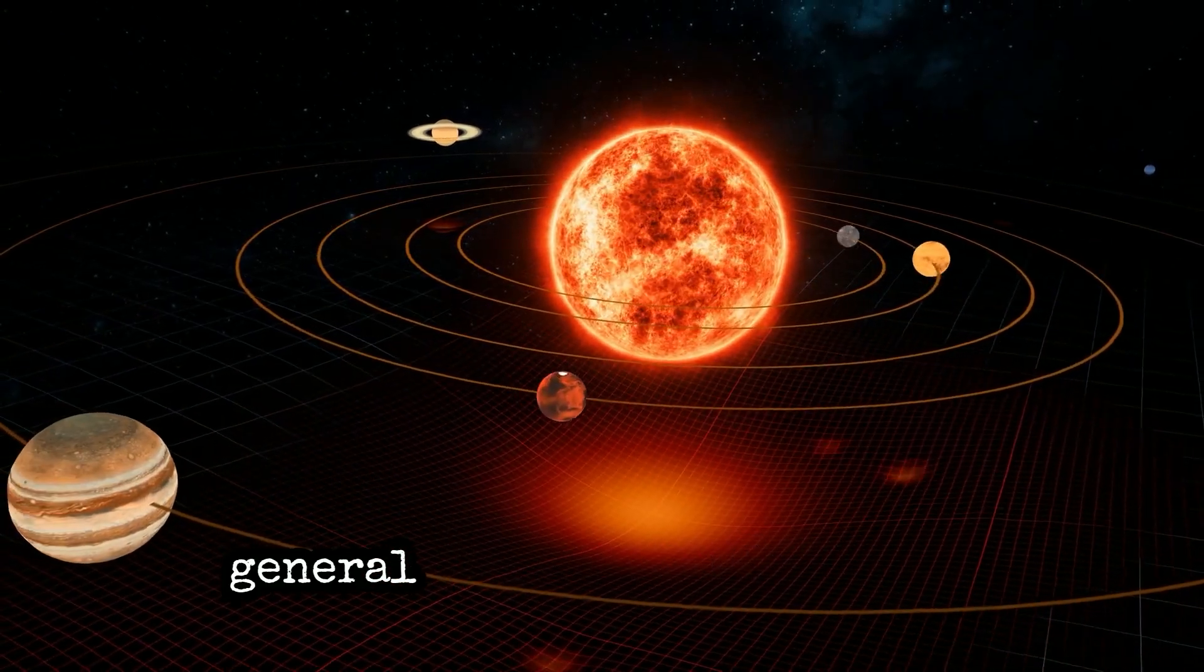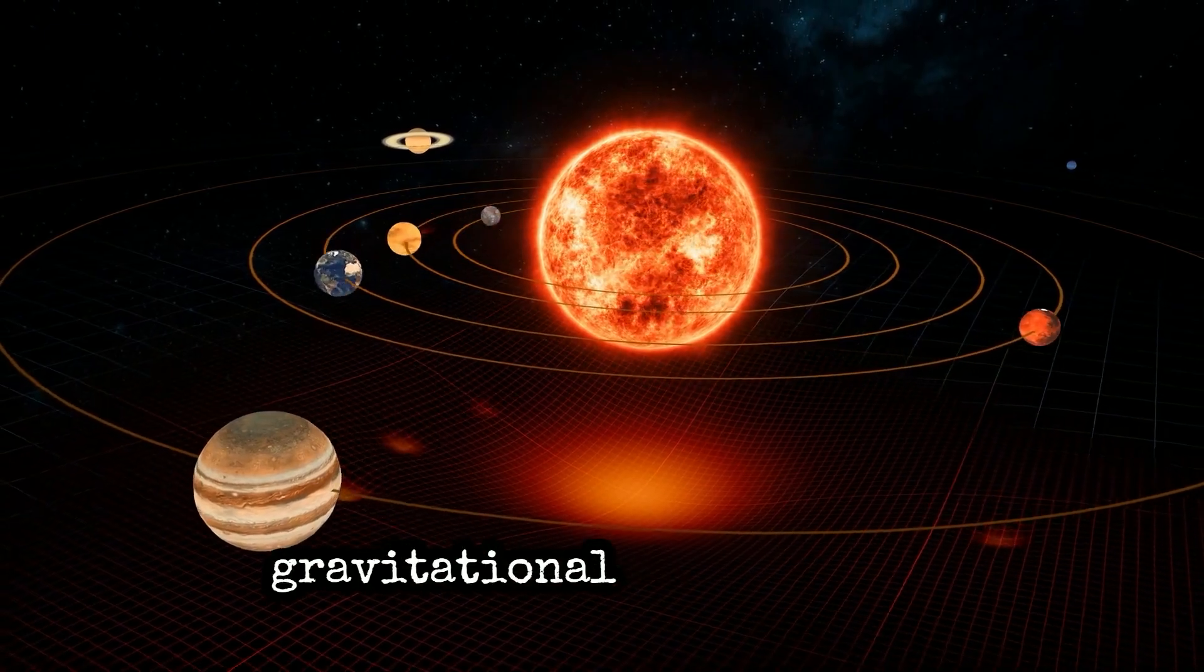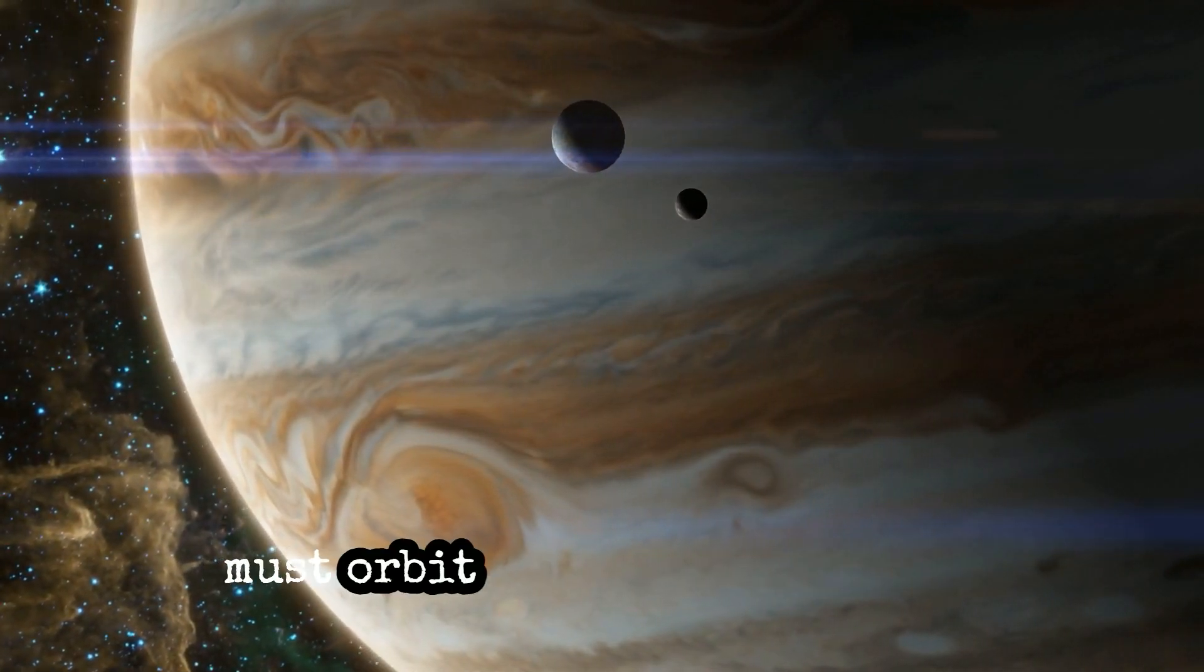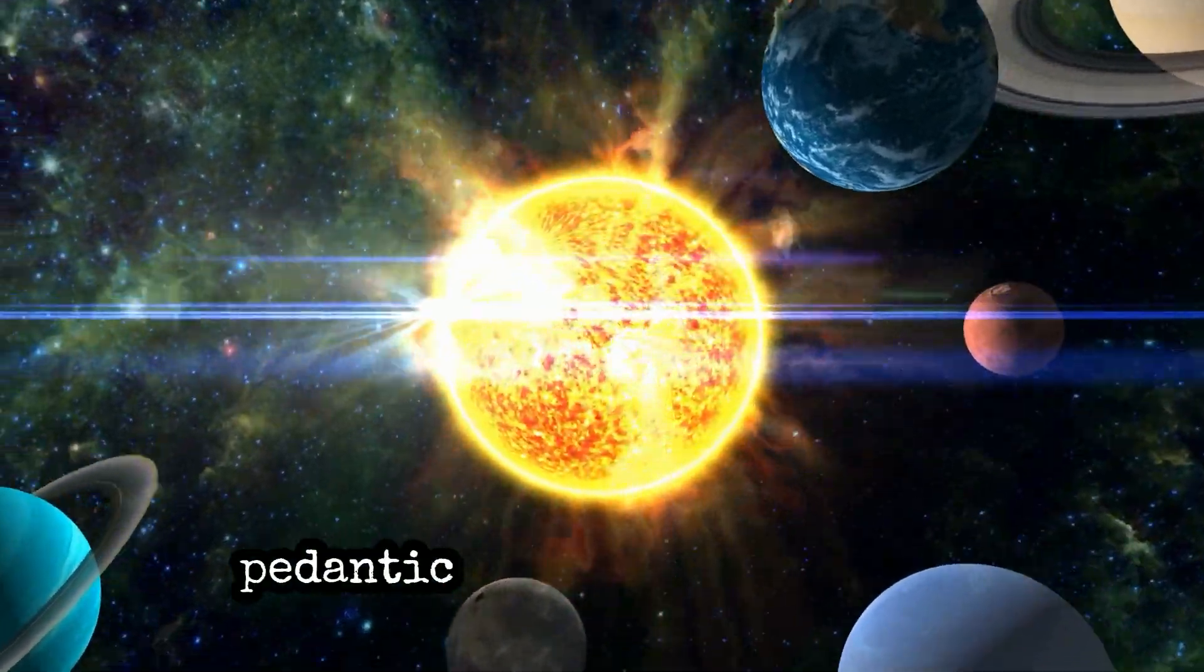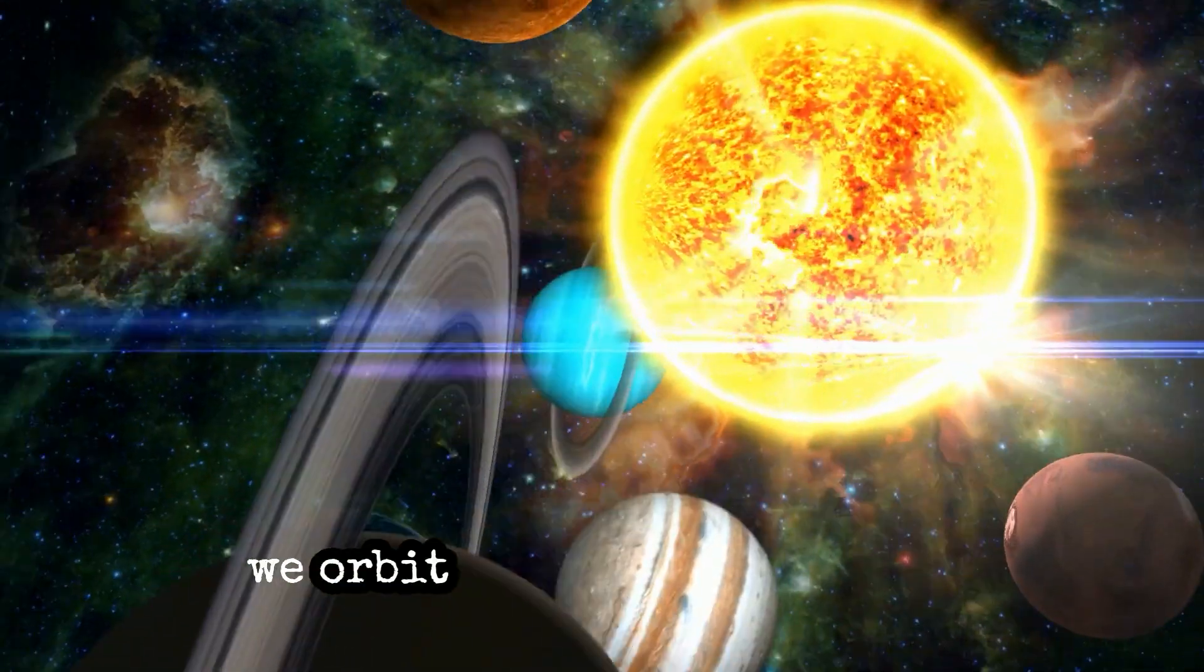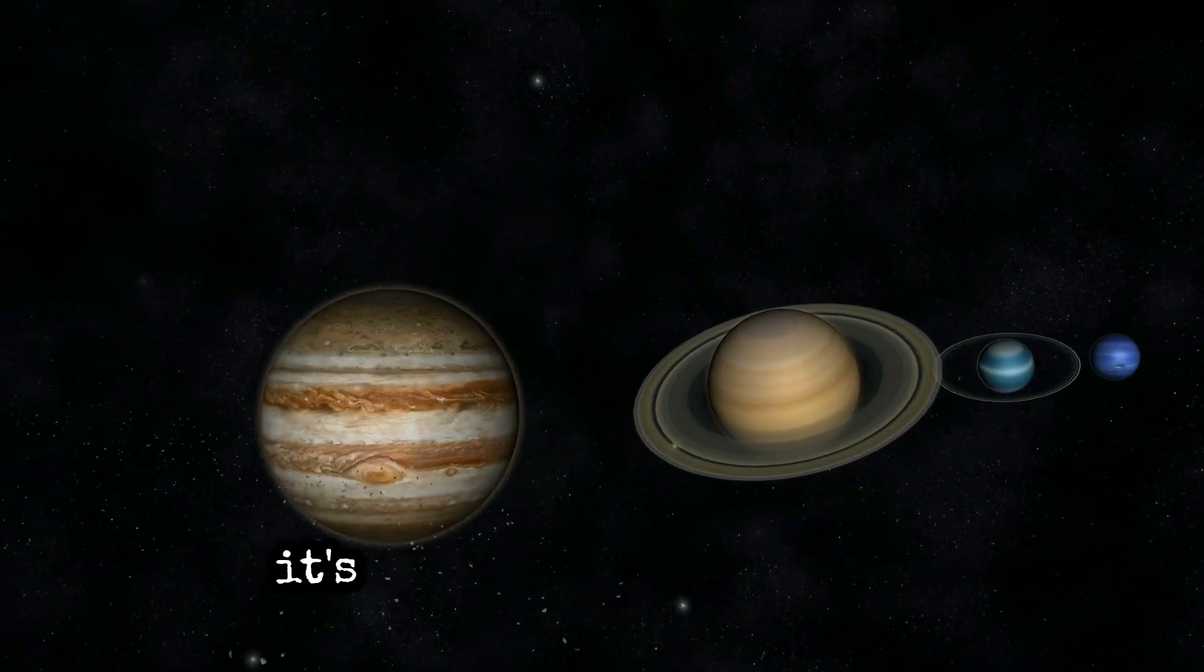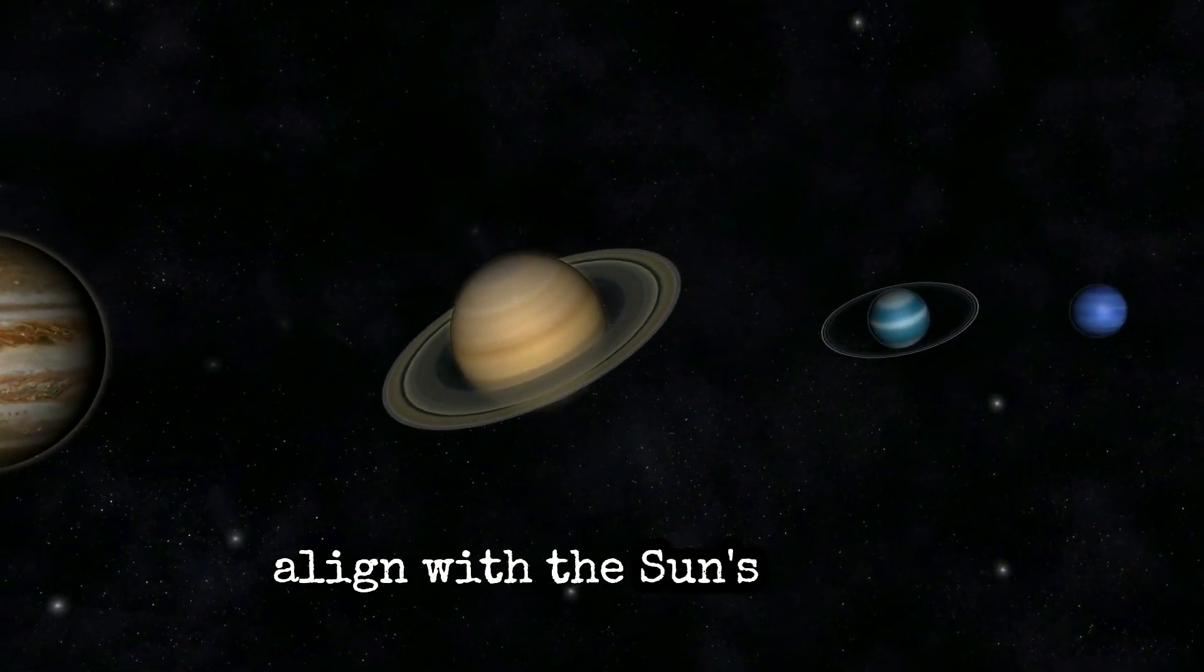Planets orbit the Sun in general terms. They don't orbit the Sun alone because the gravitational influence of mainly Jupiter means planets must orbit a new point in space. The planets do orbit the Sun of course. We are just being pedantic about the situation. The natural thinking is that we orbit the Sun's center, but that very rarely happens. It's very rare for the solar system's center of mass to align with the Sun's center.